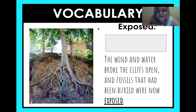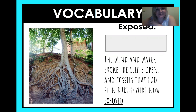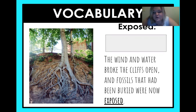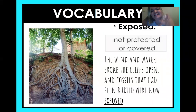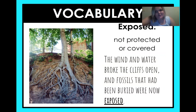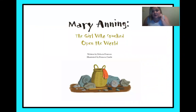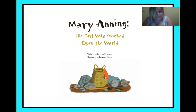Our next vocabulary word — oh no, I kind of showed it already! I exposed it. This is just too perfect with all these vocabulary words. Let's look at that picture — the roots are exposed. 'The wind and water broke the cliffs open and fossils that had been buried were now exposed.' Exposed means they're not protected or covered — they're showing. So like I showed that answer, and these roots are showing — that is what 'exposed' means. Your teacher may have you do one of our tables with definitions, antonyms, and synonyms, or just write those in a sentence. I love when we can use our new vocabulary words in a sentence.